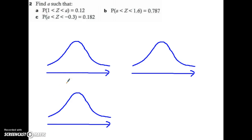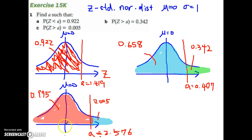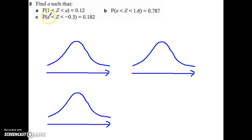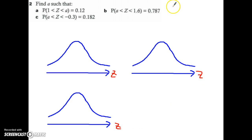Hi, in this video I'm going to go over question number 2 from exercise 15K. I hope you guys have watched the previous video where I did question number 1. Now let's look at question number 2. We are all talking about standard normal distribution because of z, where the mean is going to be 0 and the standard deviation is 1.